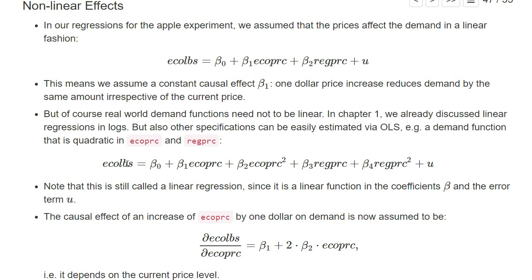The demand for ecological apples depends linearly on the price of ecological apples, but we also have a quadratic term for it, and also a quadratic term for the price of regular apples. Note that this is still called a linear regression because we still have a function that is linear in the coefficients and also linear in the error term. We can add squares, cubes, or other transformations of our explanatory variables — as long as it's a linear function of beta and the error term u, it's still called a linear regression.